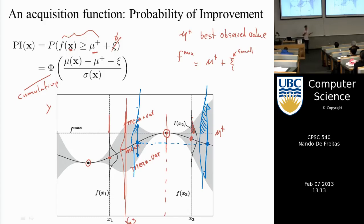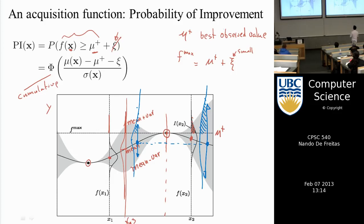A student observes: since the cumulative function phi is monotone, maximizing pi(x) is equivalent to maximizing the expression inside the phi. Yes, that is true — good observation.